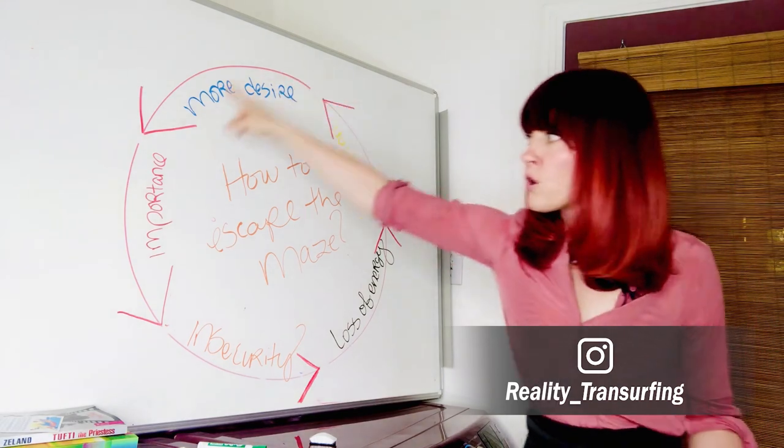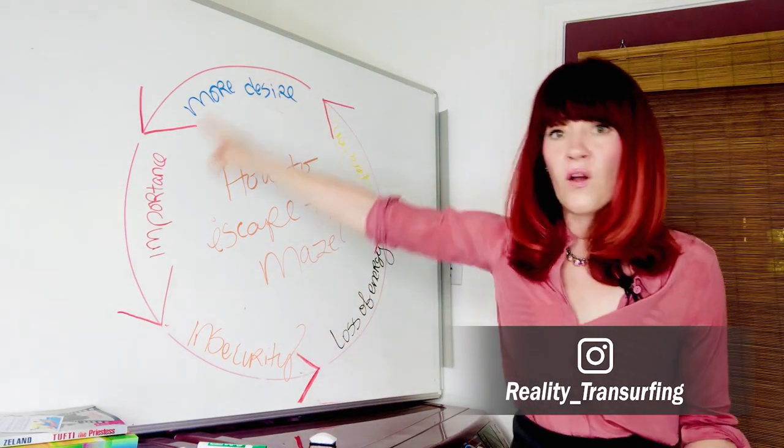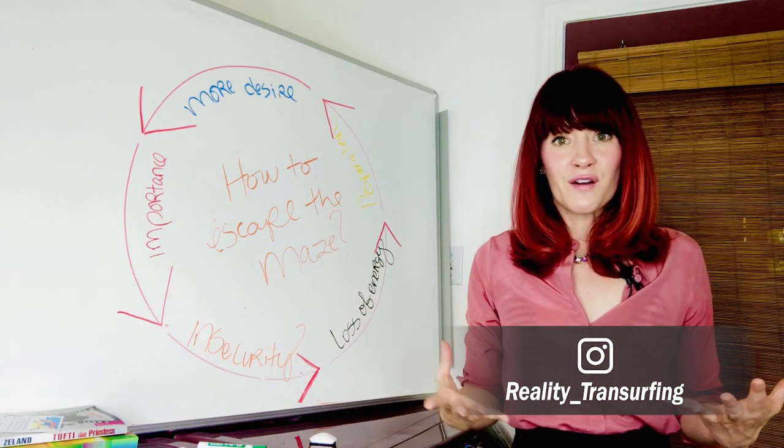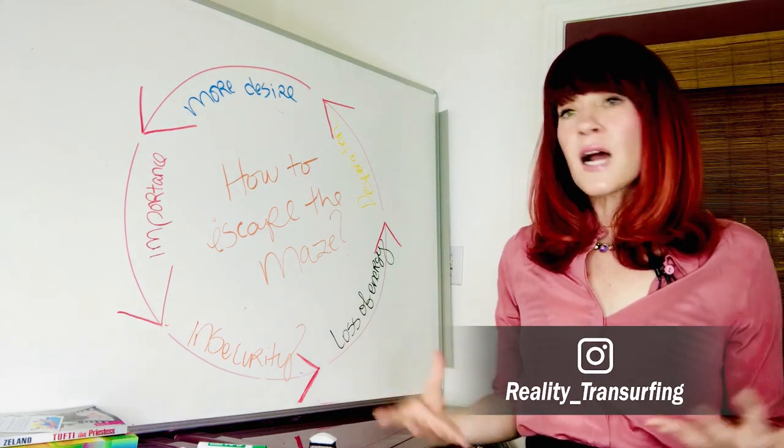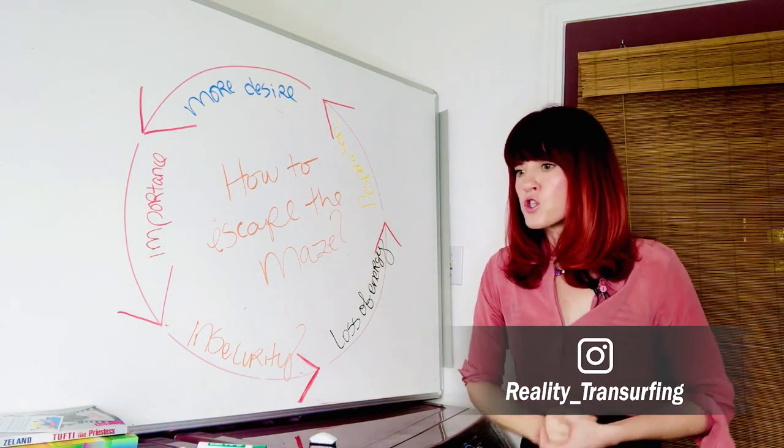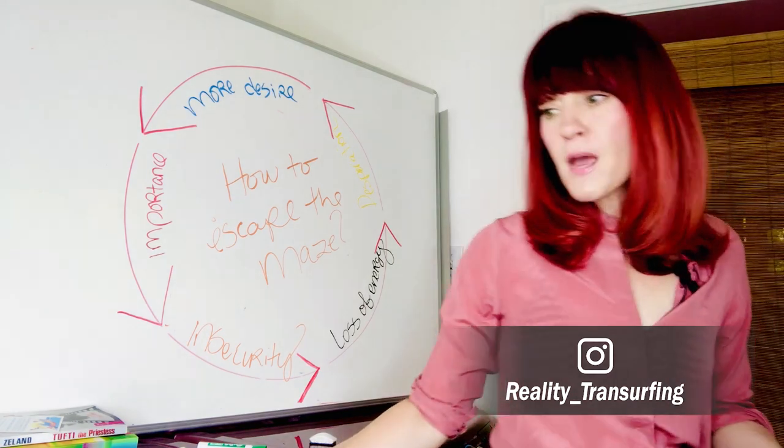So loss of energy and then kind of desperation, like this feeling of, but I want it and I can't have it and other people have it. And why not me? And all of this imbalance with really feeling a sense of hardcore inadequacy and not allowing myself to have, which would create more desire, which would create more importance, which would create more insecurity. And sure enough, you spiral around. I spiraled around on this on multiple different goals for sometimes years at a time.